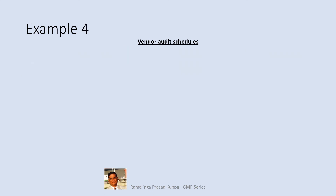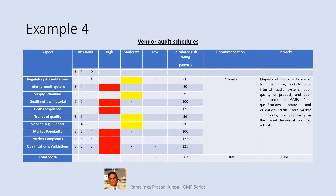Let us see another vendor audit schedule. Similar calculations are done for this vendor. Out of 10 aspects, 6 are classified as high and 4 are classified as moderate risk. The total calculated risk rating is 862. Majority of the aspects are at high risk — they include poor internal audit system, poor quality of the product, poor compliance to GMP, poor qualification and validation status, more market complaints, and less popularity in the market. The overall risk filter is high, so this vendor will be audited once in 2 years, compared to the previous vendor who is audited once in 5 years.